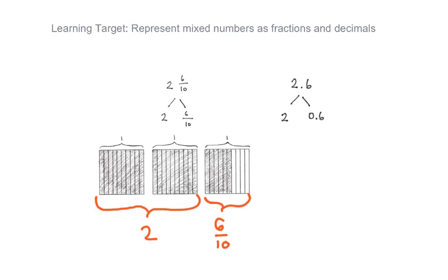And up above, we have it in fraction form and in decimal form. What I want you to notice is that right here, they have it as 2 and 6 tenths. And then down below, they decomposed it into 2 and 6 tenths.